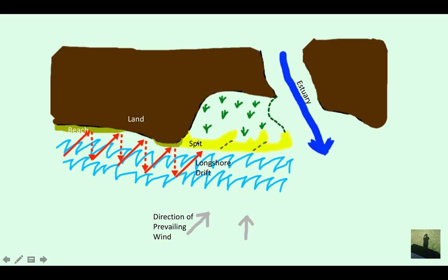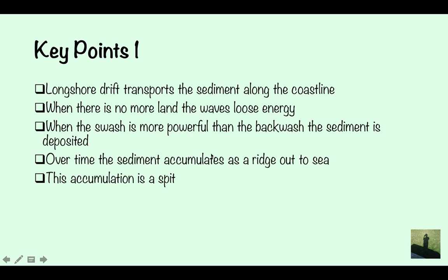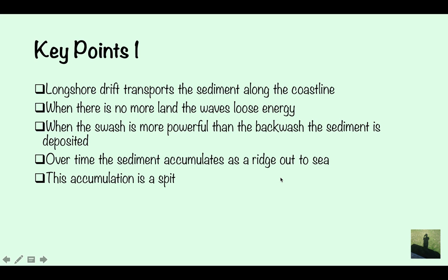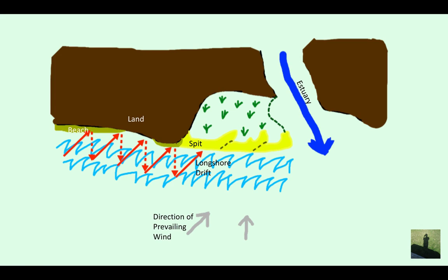Where there is no more land, the swash is going to be stronger than the backwash, and over time this sediment accumulates as a ridge out to sea. It's going to accumulate as a spit out to sea. This accumulation is a spit — a depositional landform.